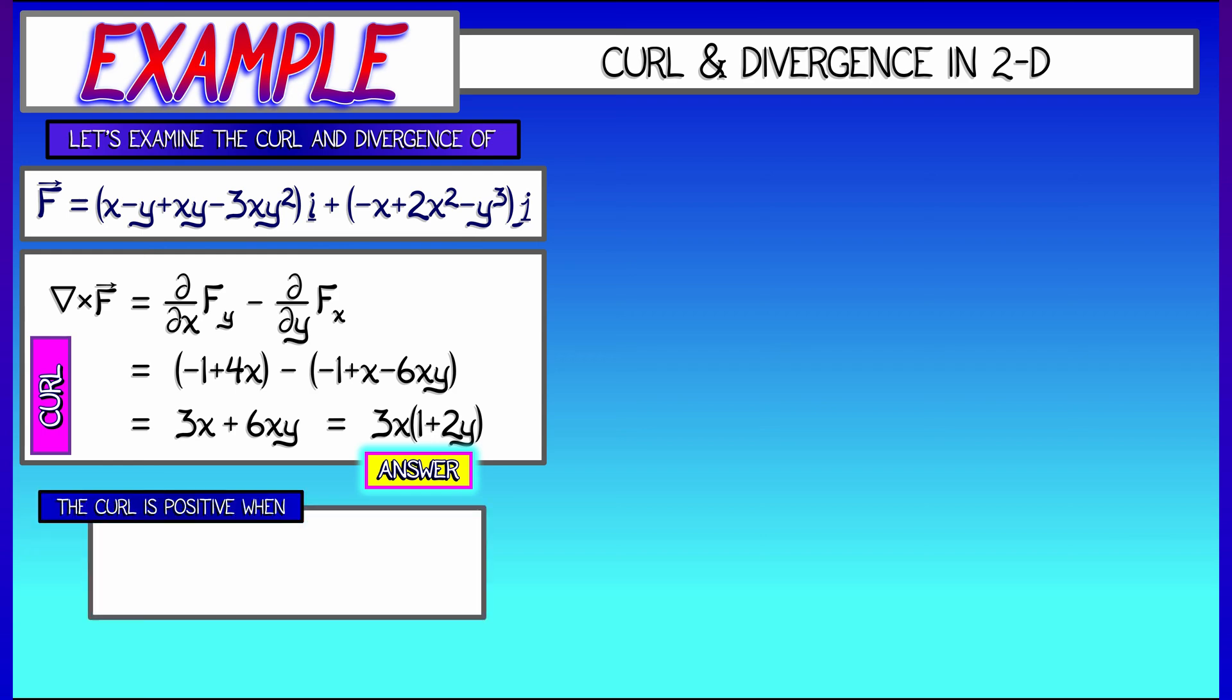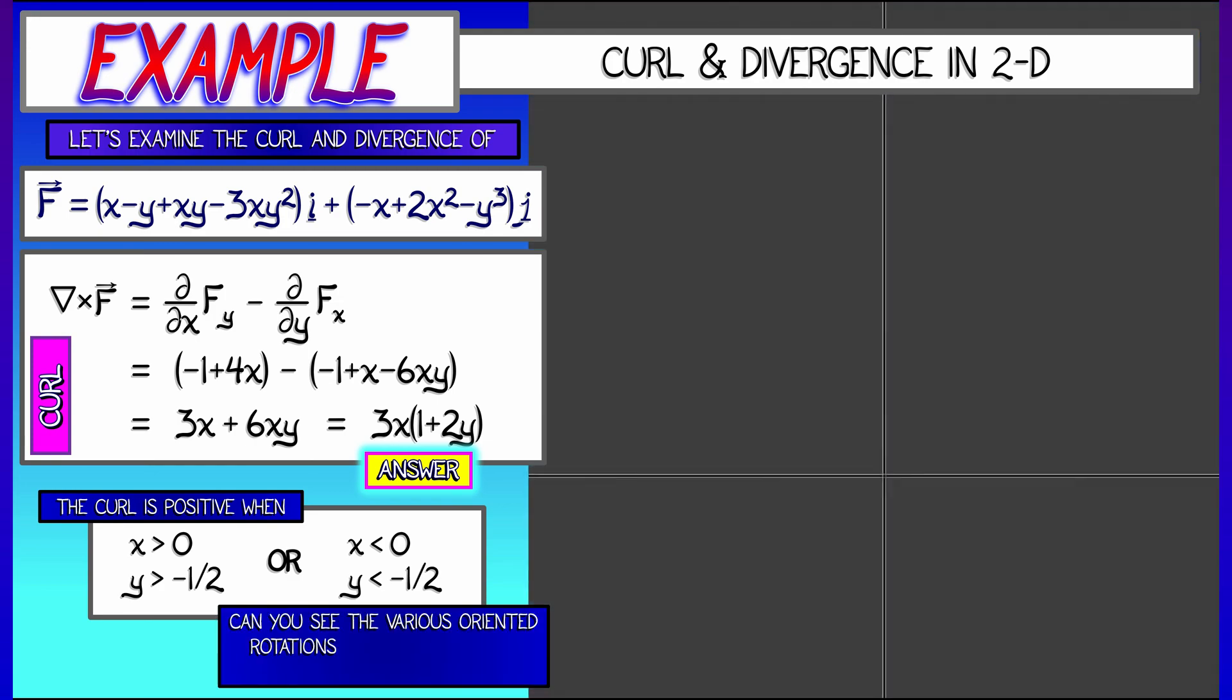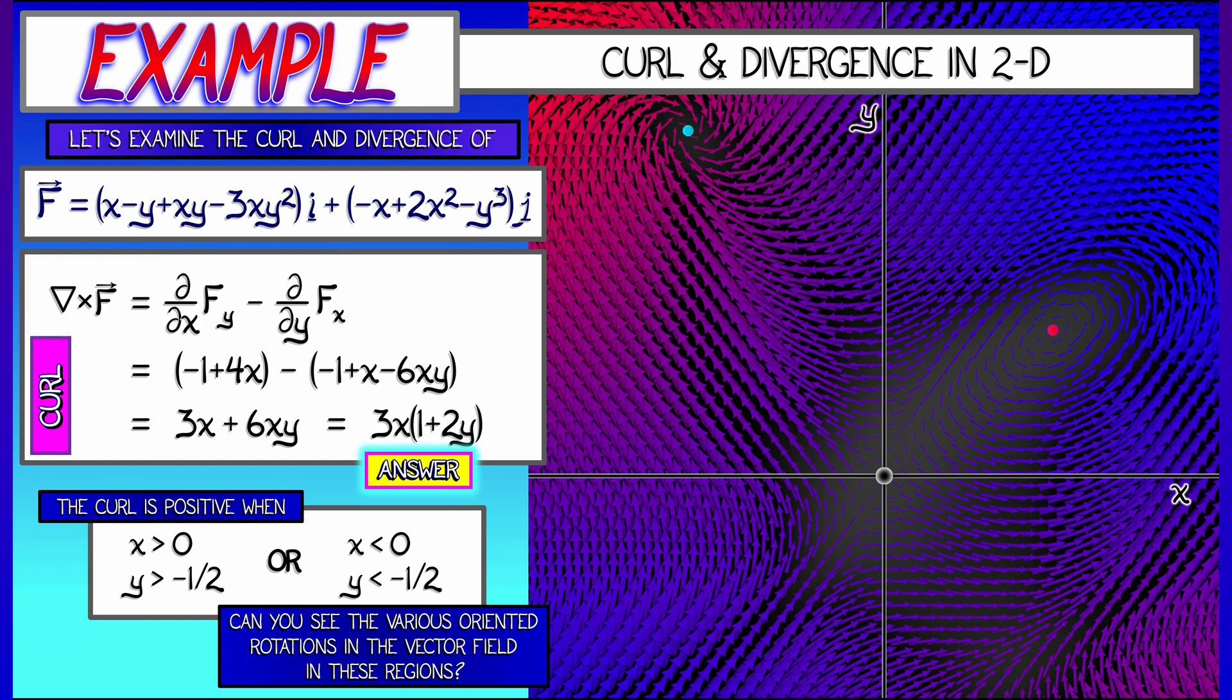We can see that this curl is positive when x is positive and 1 plus 2y is positive. That is, y is bigger than negative 1 half. Or it's also positive when we flip both inequalities and we have a negative x and y less than negative 1 half. Now what does this look like? What's the vector field going to present when we try to draw it out?